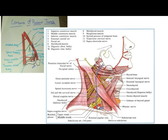The nerve to subclavius muscle, having the root value of C5 and C6, arises from the upper trunk of the brachial plexus and can also be seen in the supraclavicular triangle. The nerve to subclavius descends in front of the brachial plexus, in front of the subclavian vessels, and finally reaches deep to the subclavius muscle.